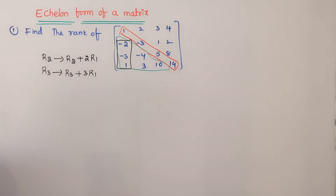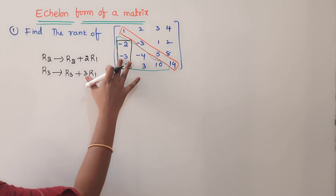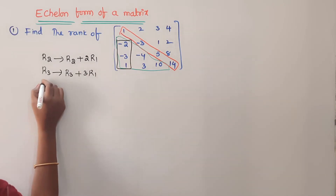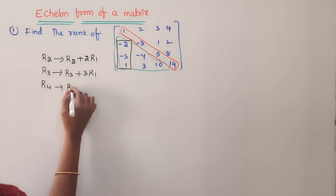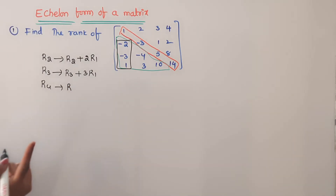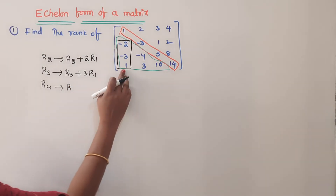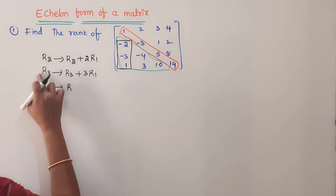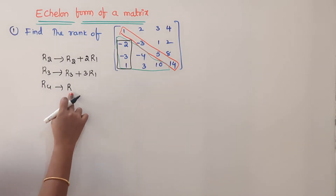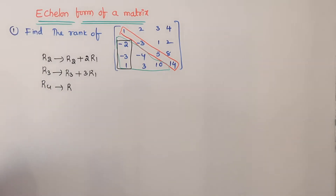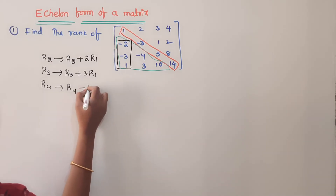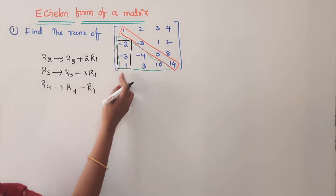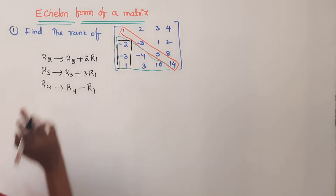I did not perform any other operation here. R4 implies R4 minus R1, since there is a doubt: I am using R3 for R3's operation, and in the same case R4. R4 minus R1, using R1 plus one minus one equals zero.